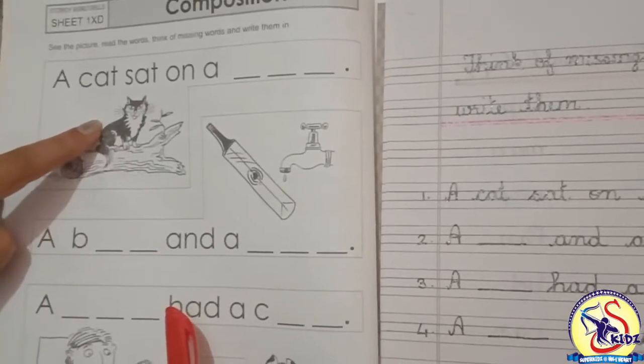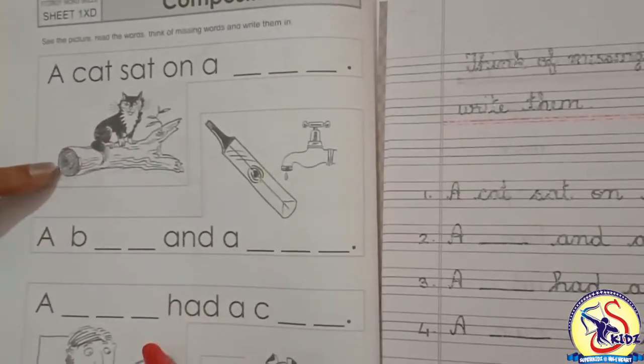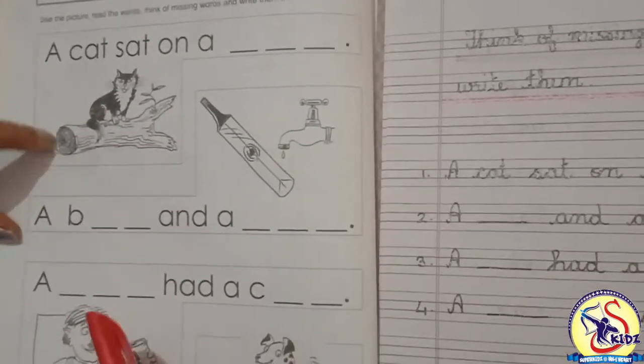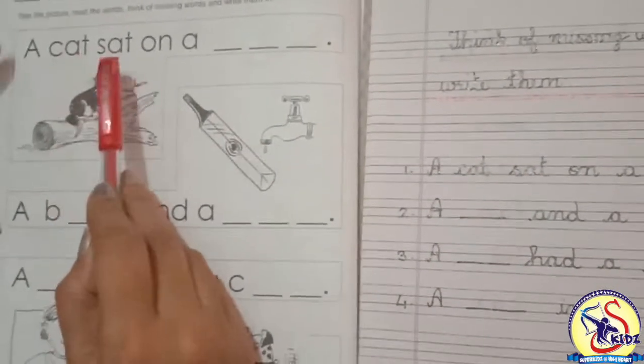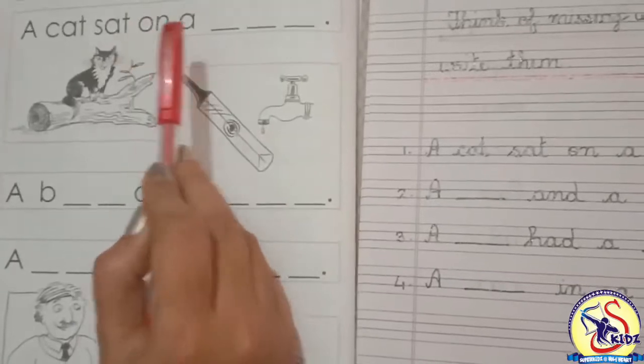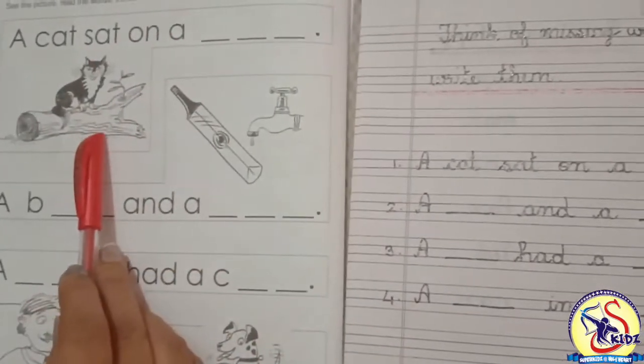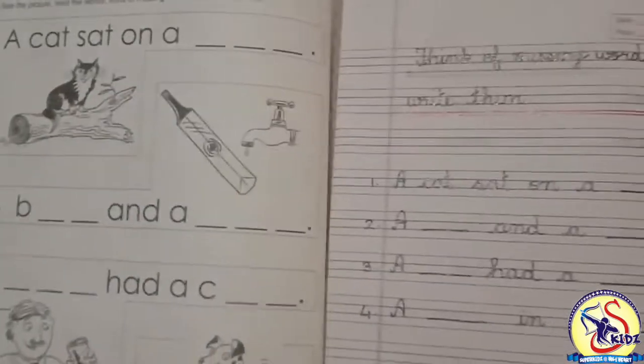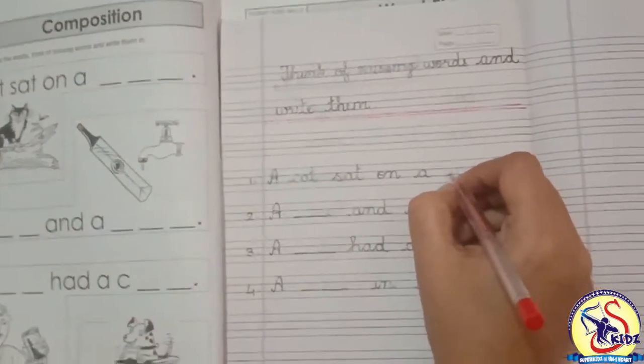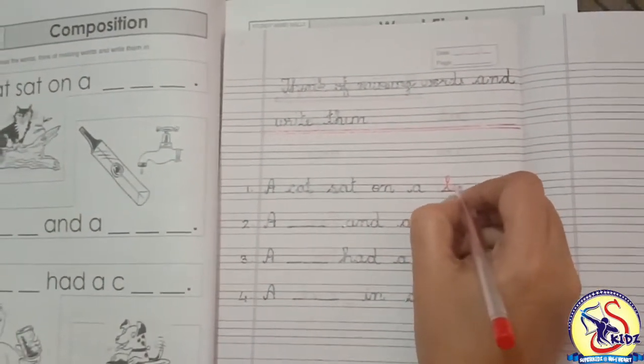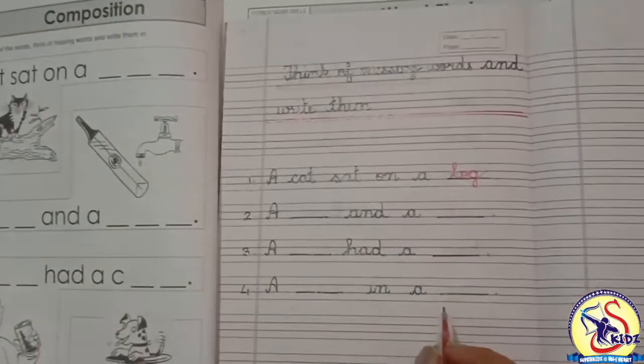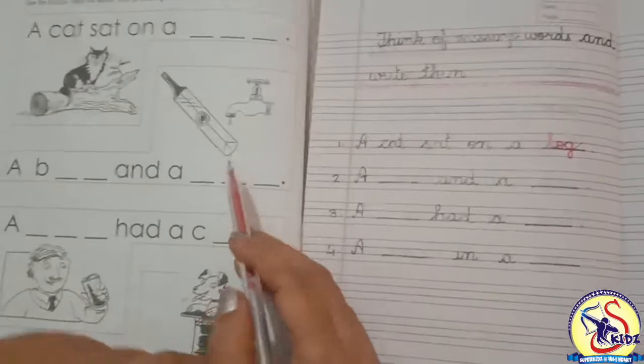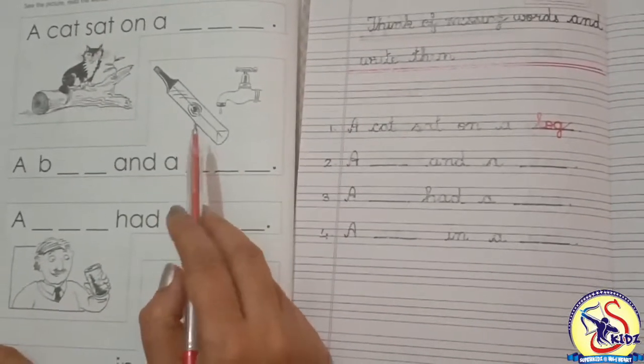is a cat and the cat is sitting on a log. Now read the words: A cat sat on a log. So we will write the word log here. L-O-G, log. Our next picture is... this is the